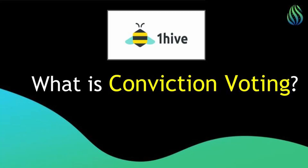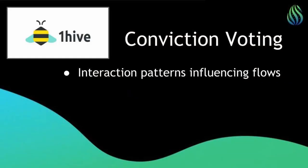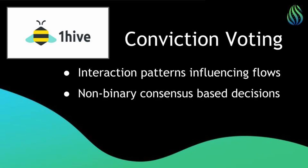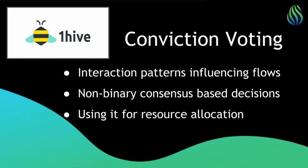Tell us a little bit about conviction voting — I think this concept of real-time voting and signaling is still very new for some people. Conviction voting — I feel like voting is almost like a red herring in the sense that the interaction patterns are influencing flows. You're not necessarily making binary consensus-based decisions all of the time, and so when we're using it, we're using it to distribute tokens.